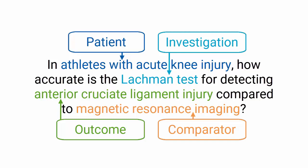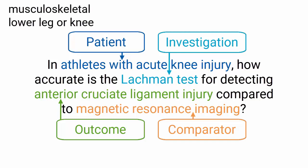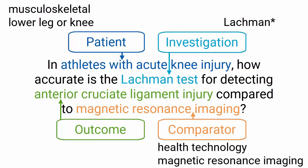Now think of search terms for each of the PICO elements. The patient could be identified using 'musculoskeletal' in the drop-down list for the subdiscipline field, and 'lower leg' or 'knee' in the drop-down list for the body part field. The investigation could be identified by typing 'Lachman*' in the name of index test field. The comparator could be identified by selecting 'Health Technology' in the drop-down list for the type of reference test field, or by typing 'Magnetic resonance imaging' into the name of reference test field. And the outcome could be identified by typing 'Anterior cruciate ligament' into the abstract and title field.